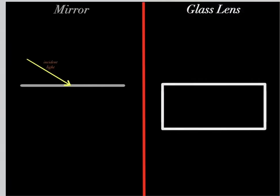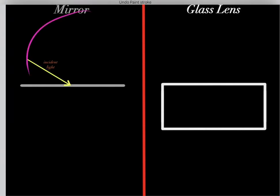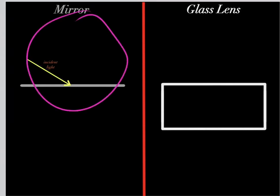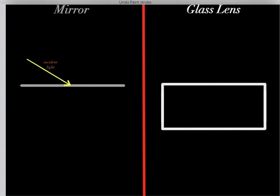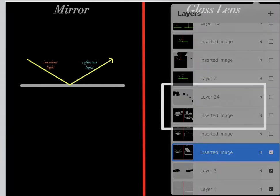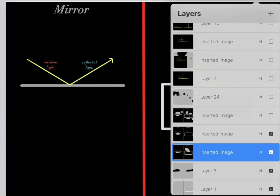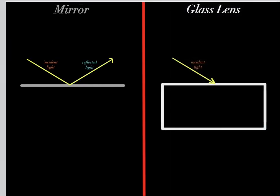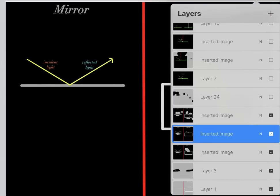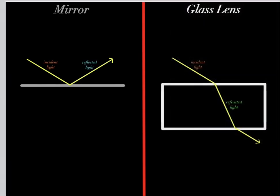For example, let's say we have this ray of light hit this mirror. What's going to happen? We know mirrors reflect light, so the light is going to be reflected. However, what if we have a ray of light hit this glass lens? We know glasses and lenses refract light, so this light is going to be refracted into this lens.